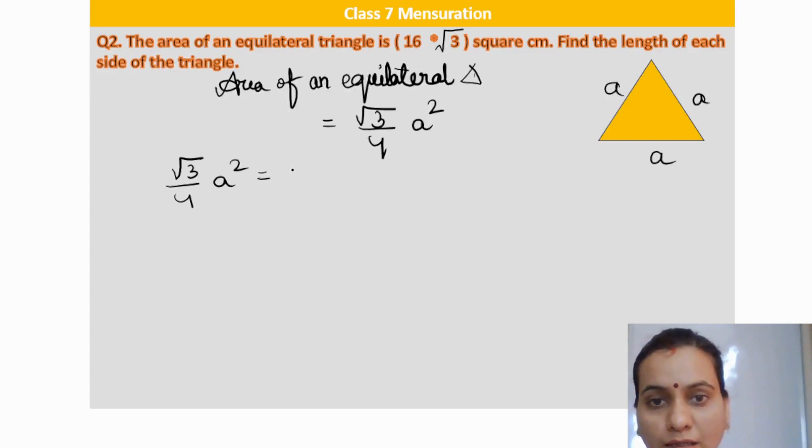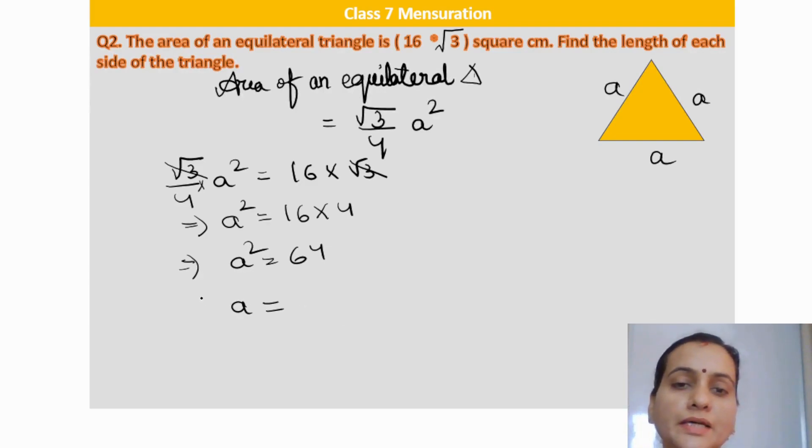Root 3 by 4 a square is equal to 16 into root 3. Root 3 and root 3, both cancel out. So a square by 4 is equal to 16. a square will be equal to 16 into 4, which is 64. So a is equal to 8. Quite an easy question.